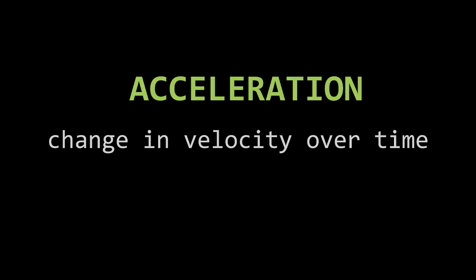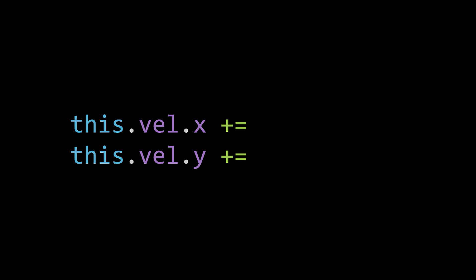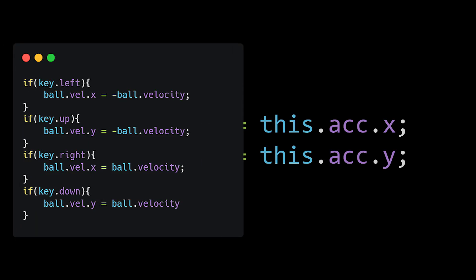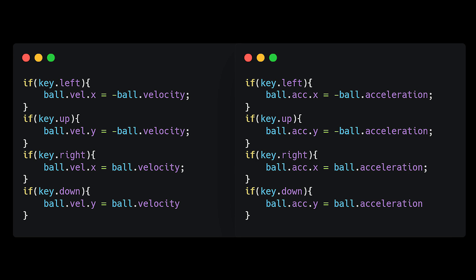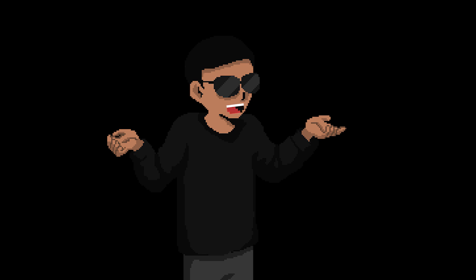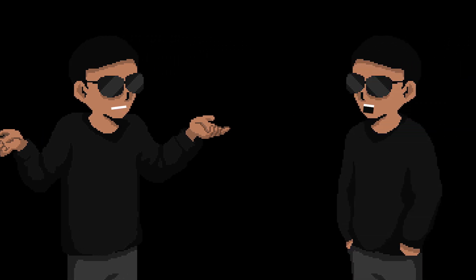It stops moving immediately when I let go and it just feels unnatural and not physics-ish. Which brings us to acceleration, the change in your velocity over time. Now the velocities themselves will be incremented by the acceleration value, and instead of controlling the x and y velocities, we're controlling the x and y accelerations. It definitely feels a lot smoother, but now if we let go, it keeps moving at a constant speed. Why is that?